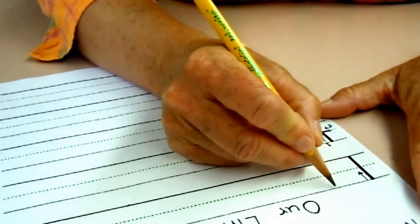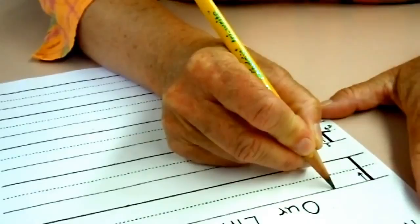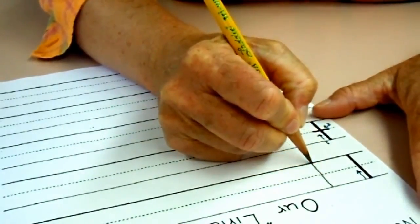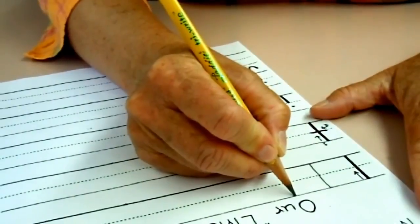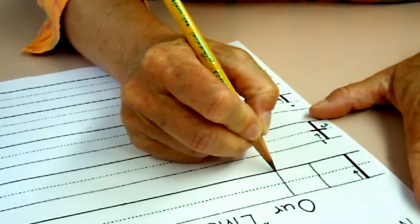Our first line letter is L. We start at the sky. We go down to the ground, and we stop. I'll do one more. Start at the sky. Go down to the ground. Stop.